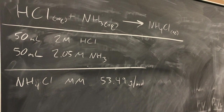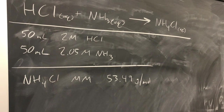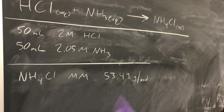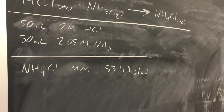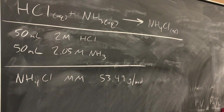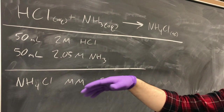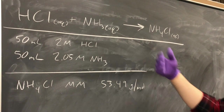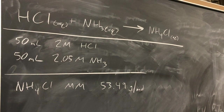For Part B, in the second styrofoam cup, you need to measure the mass of the salt formed in the first cup. We used 2 molar HCl and 2.05 molar ammonia solution, forming ammonium chloride. To calculate the mass needed for Part B, determine the limiting reagent, use the volume you used, and apply dimensional analysis to calculate the theoretical yield, then use the molar mass to figure out the required mass.